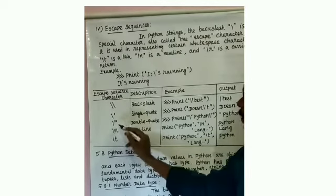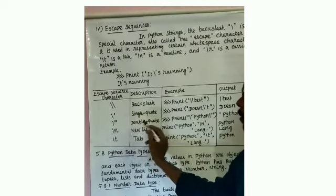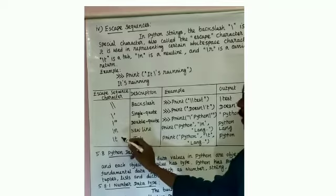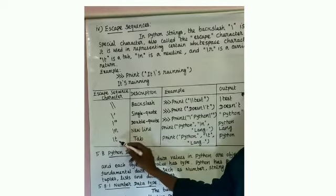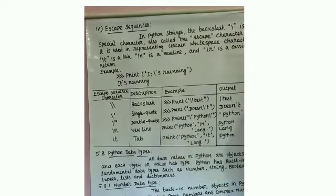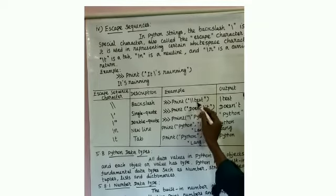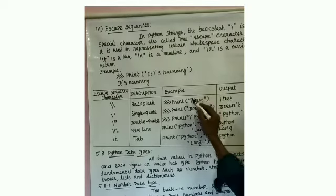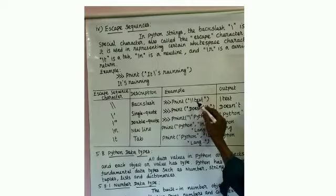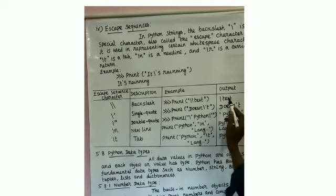The escape sequence characters are: backslash (\\), single quote (\')), double quote (\")), \n for new line, and \t for tab. For example: print '\\test' — the output is '\test', the backslash escape character is not displayed, so '\test' is shown. Next, single quote escape sequence.